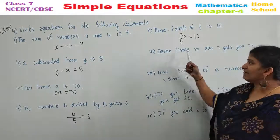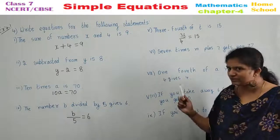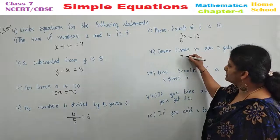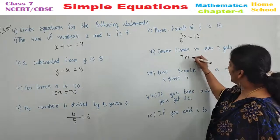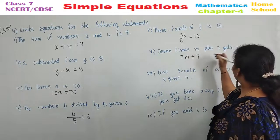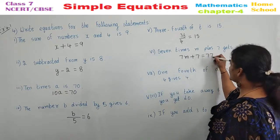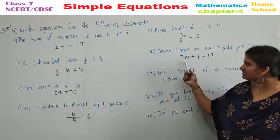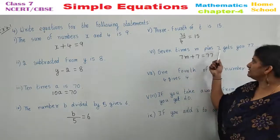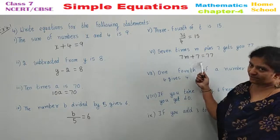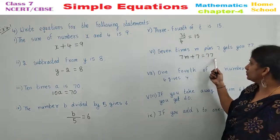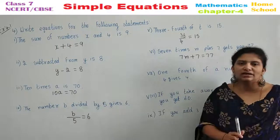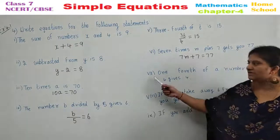Sixth one. 7 times. Times means multiplication. 7 times M plus 7 gets you 77. Again 7 times M. 7M plus 7 gives you 77. 7M plus 7 is equal to 77.